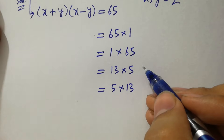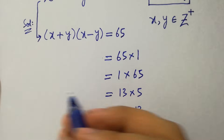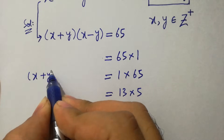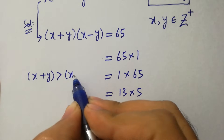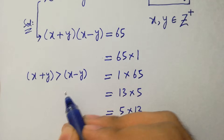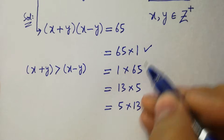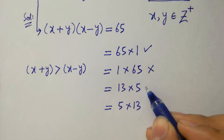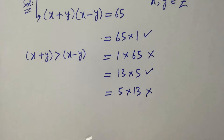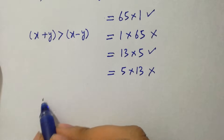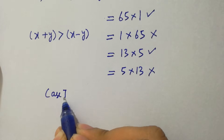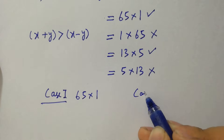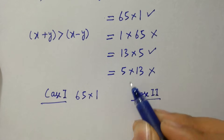So we have 4 choices. By comparison, x plus y must be greater than x minus y. So 65 greater than 1 is possible; 1 less than 65 is not possible; 13 greater than 5 is possible; 5 less than 13 is not possible. So the possible cases are: first case 65 times 1, and second case 13 times 5.